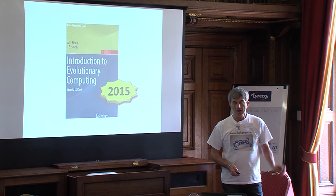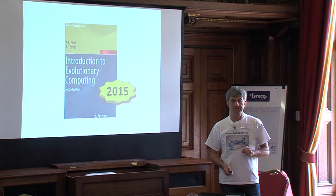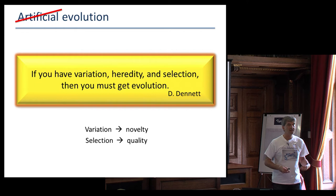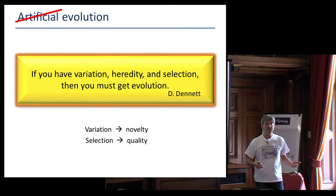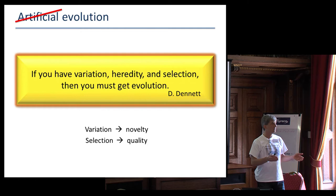To summarize it very briefly, it's about artificial evolution. You may even say that this is a contradiction in terms. There is no such thing as artificial evolution. Quoting Daniel Dennett, if you have variation, heredity, and selection, then you must get evolution. Which means that evolution is evolution is evolution. It could be in wetware, but it could be in software. It may not make sense to distinguish both.